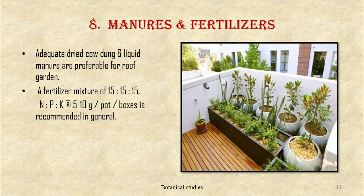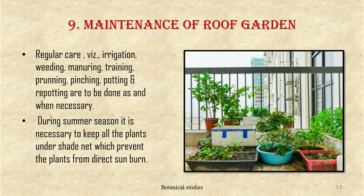Eighth, manures and fertilizers — adequate dried cow dung and liquid manure are preferable for roof gardens. A fertilizer mixture of NPK at 50:50:50 at 5 to 10 grams per pot or box is recommended. For general maintenance of a roof garden, regular care via irrigation, weeding, manuring, training, pruning, pinching, potting, and repotting can be done as and when necessary.